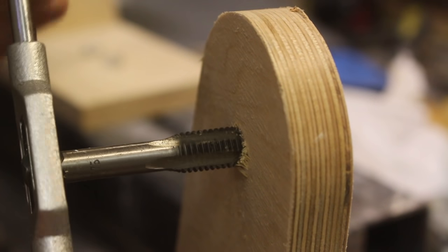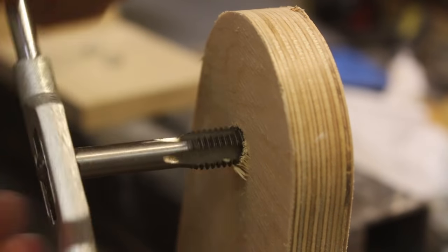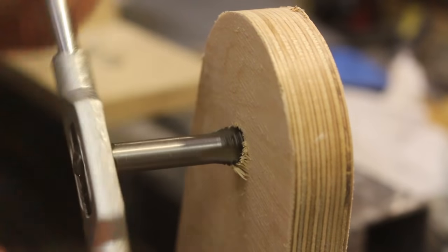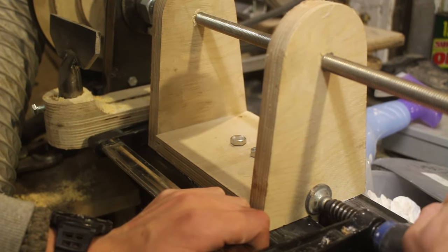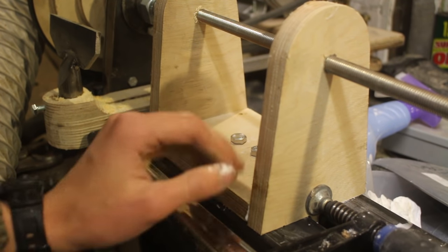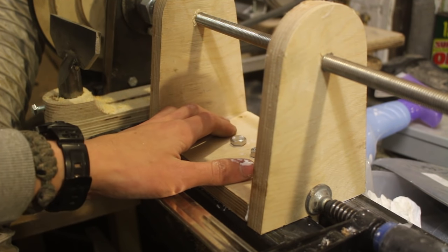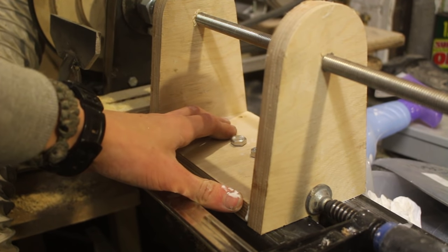I tap both of the holes in these two pieces to an M12 thread so that I can fit an M12 threaded rod through them. I then put these pieces on the base of the lathe and I can glue them all together using wood glue. As you can see the bottom piece just has two bolts which are M8 which then go through the base of the lathe and clamp it down.